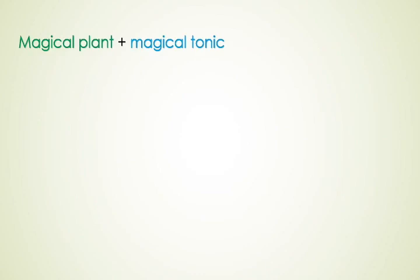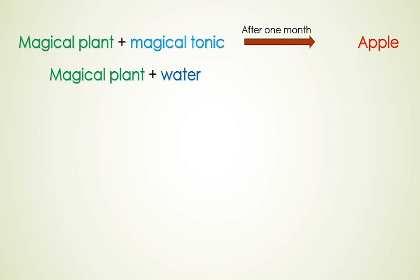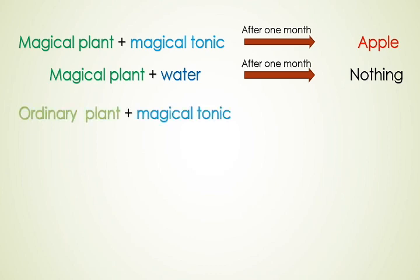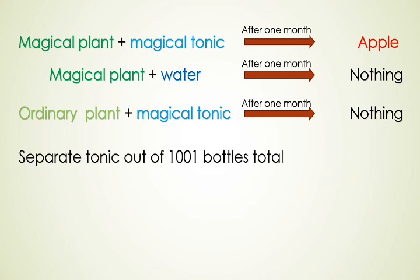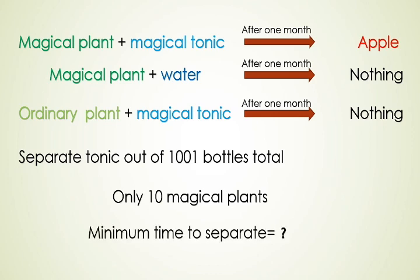In our question, if the magical tonic is injected into a magical plant, then after exactly 1 month it will produce an apple. But if water is injected, after 1 month nothing will be produced. We have to separate the tonic out of 1001 bottles in total — 1000 bottles of water and 1 bottle of tonic. The main challenge is that we have only 10 magical plants, and with this criteria we have to calculate the minimum time in which we can separate the tonic from the water.